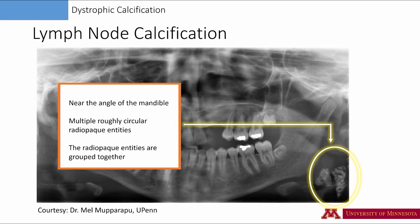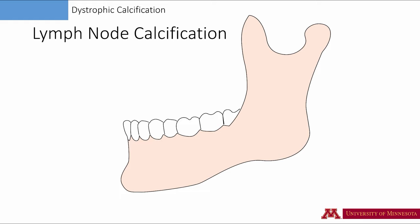This radiograph was kindly given to me by my good friend, Dr. Malmo Parapu, professor of oral and maxillofacial radiology at the University of Pennsylvania School of Dentistry. Let me draw the location of the lymph node calcifications — multiple circular radiopacities, a little bit distal and inferior to the angle of the mandible. In late stage, these radiopacities may appear uniformly dense, almost like a cauliflower instead of a bunch of grapes.